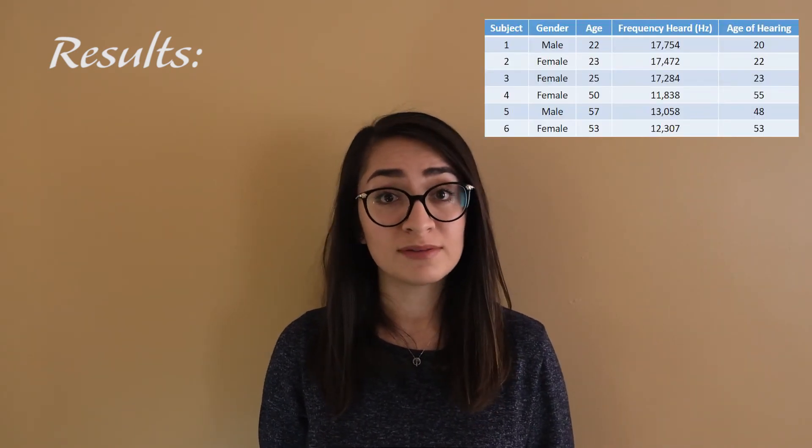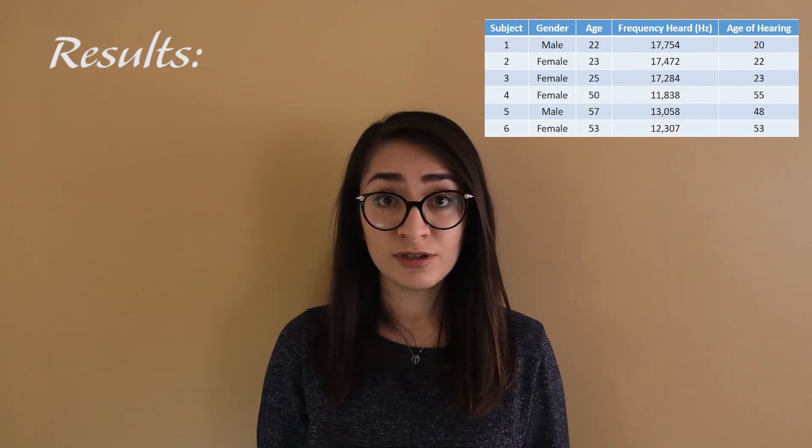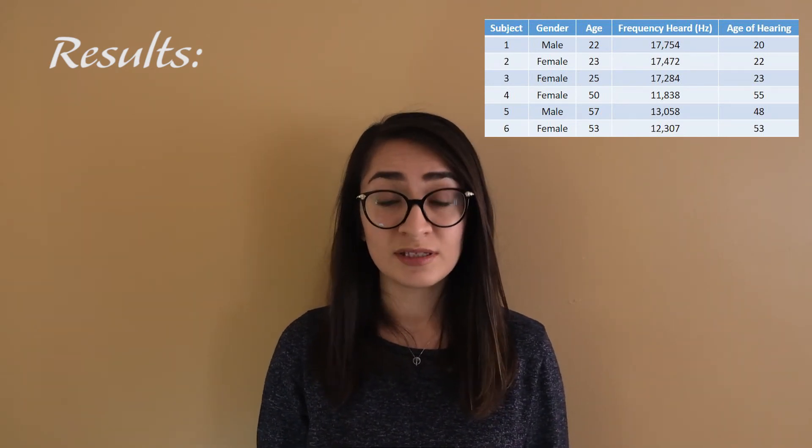As for our results, subjects between the age of 22 to 25 years old could hear frequencies of about 17,000 hertz, and for our older age group between 50 to 60 years old, the frequency ranges they could hear were between 11,000 to 13,000 hertz. Based on the results, we came up with average frequencies for each age group. For the age range of 22 to 25, the average frequency was 17,503 hertz. For the age range of 50 to 60, the average frequency was 12,401 hertz.